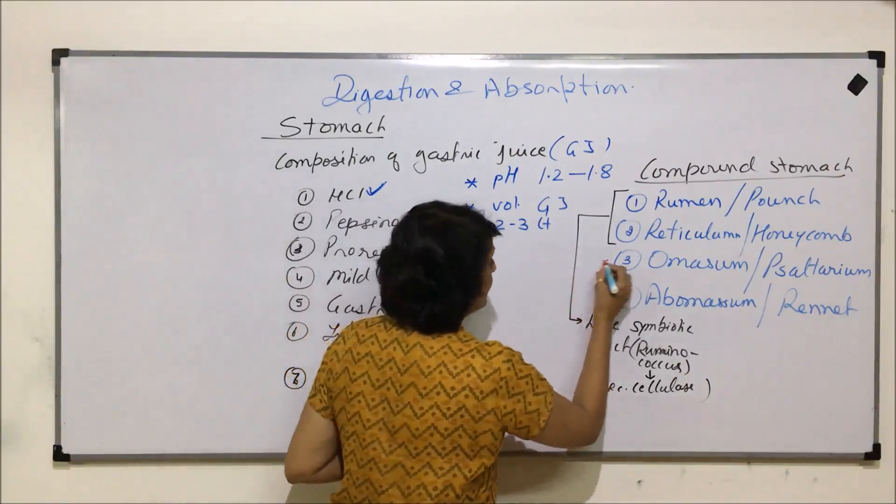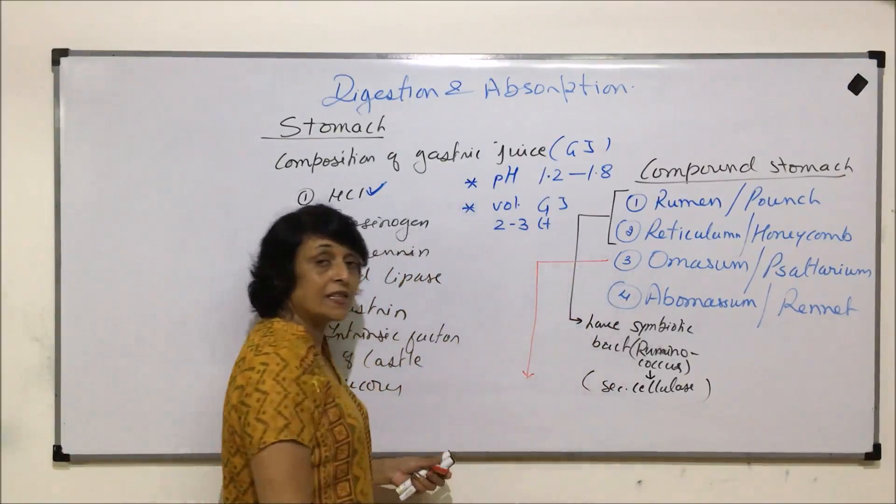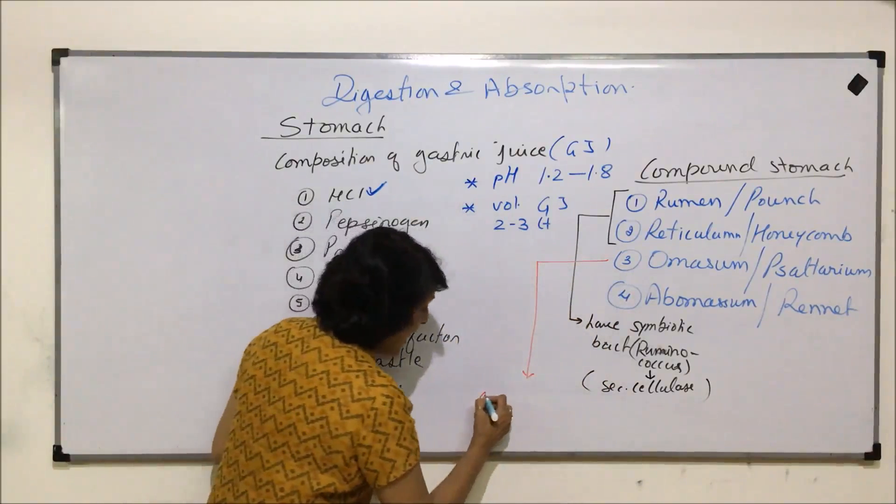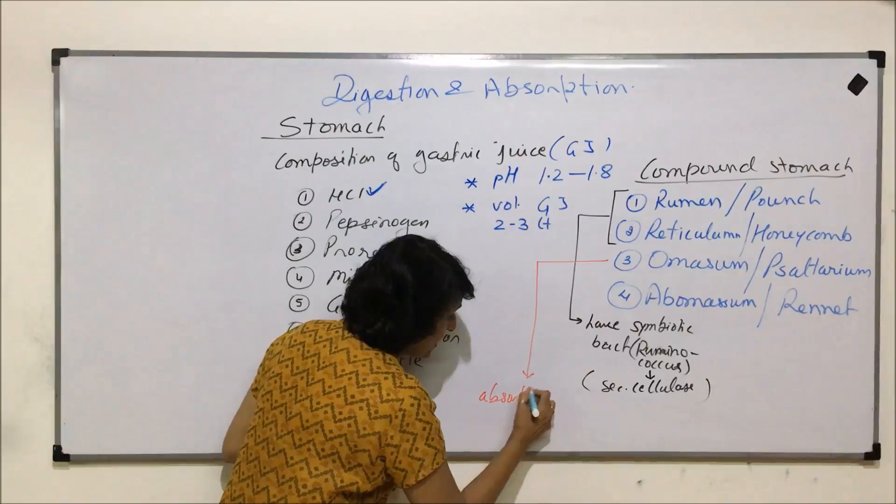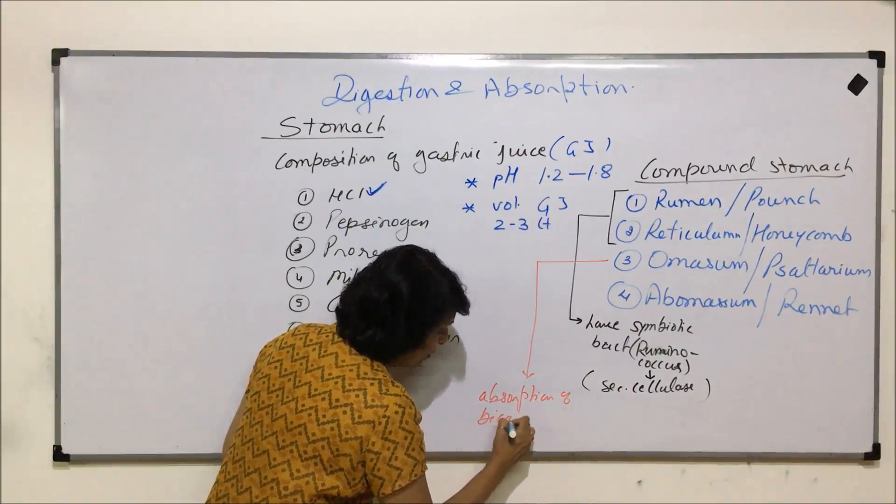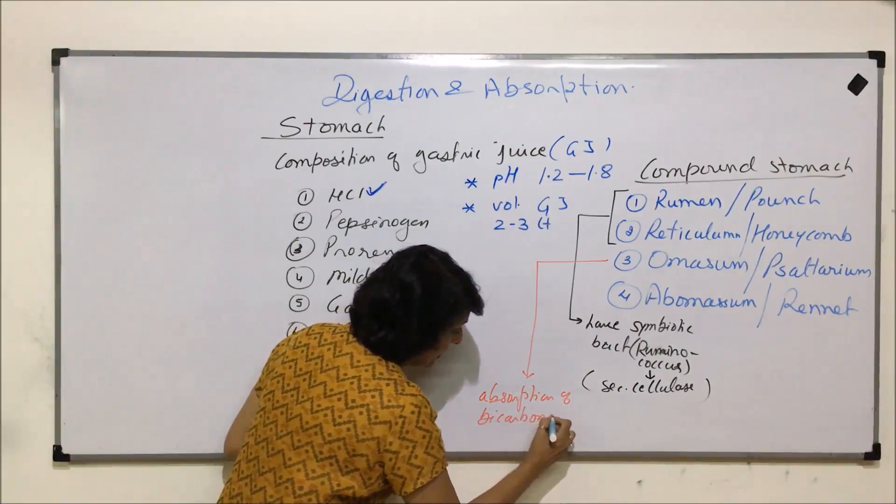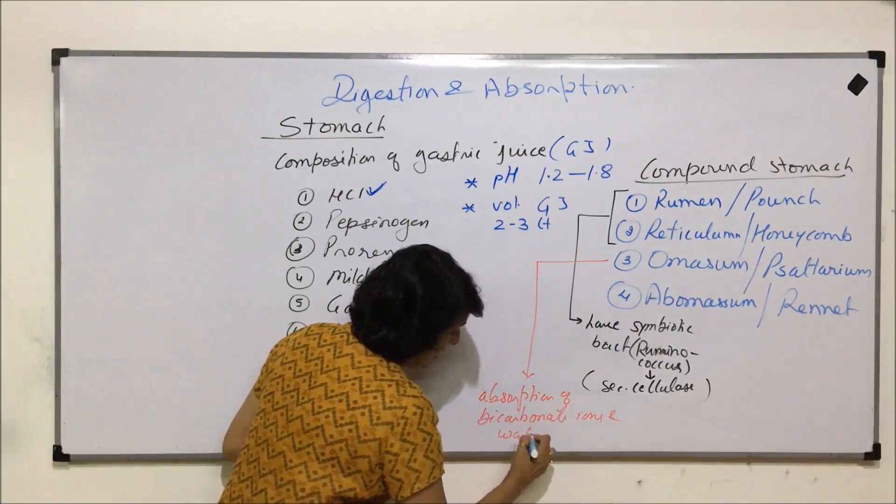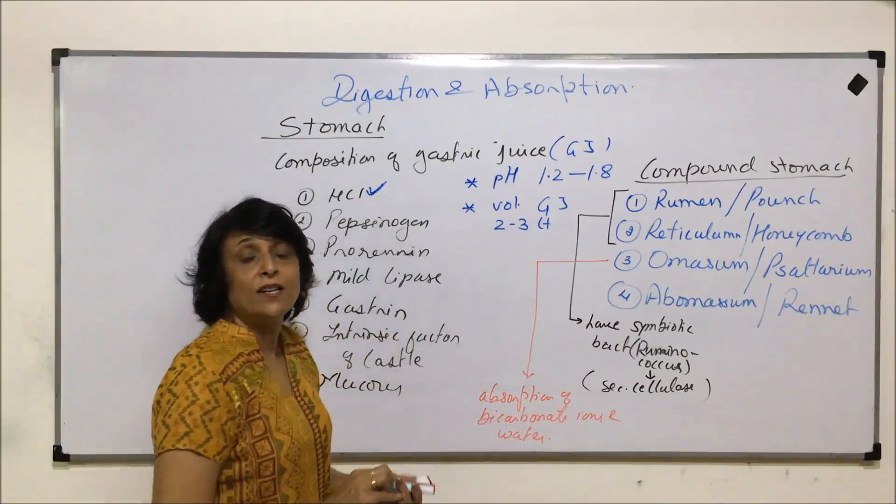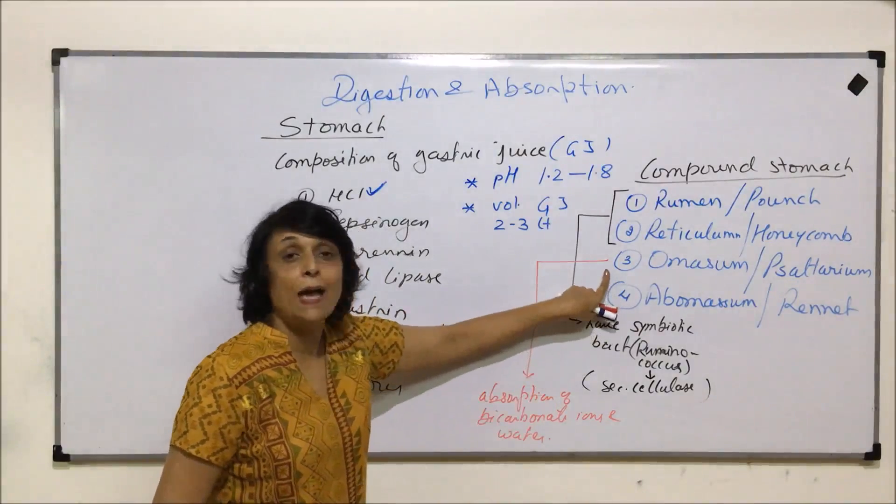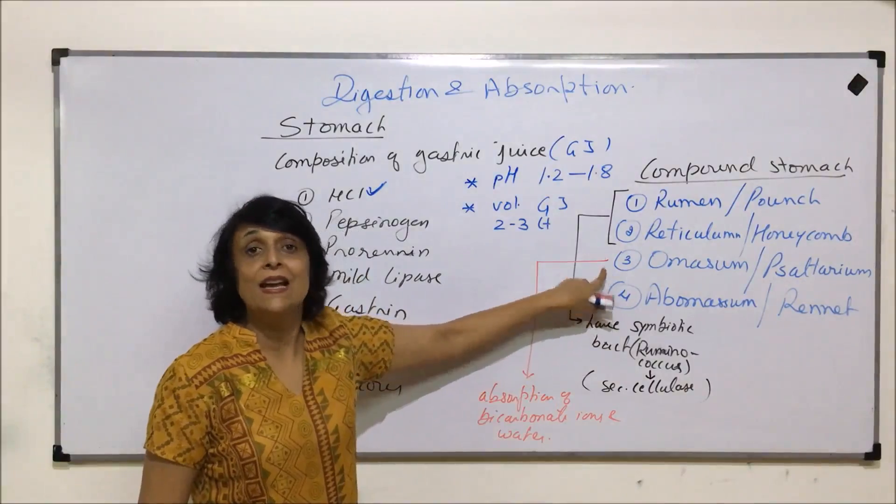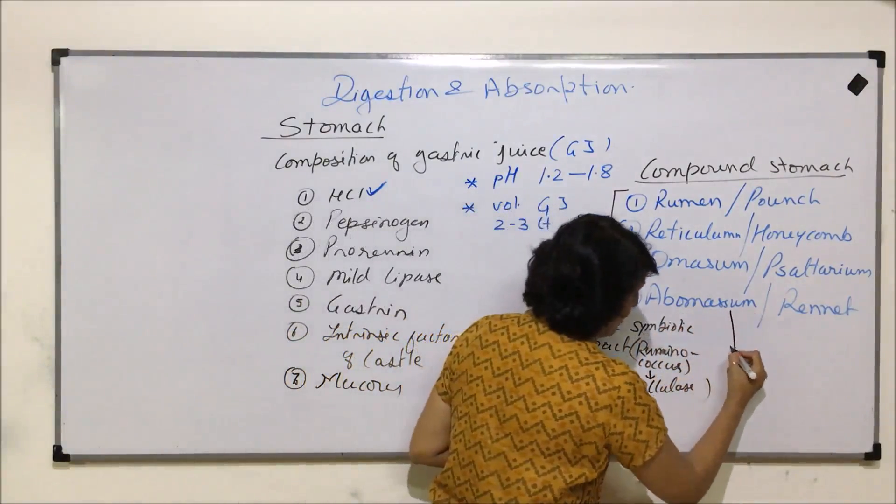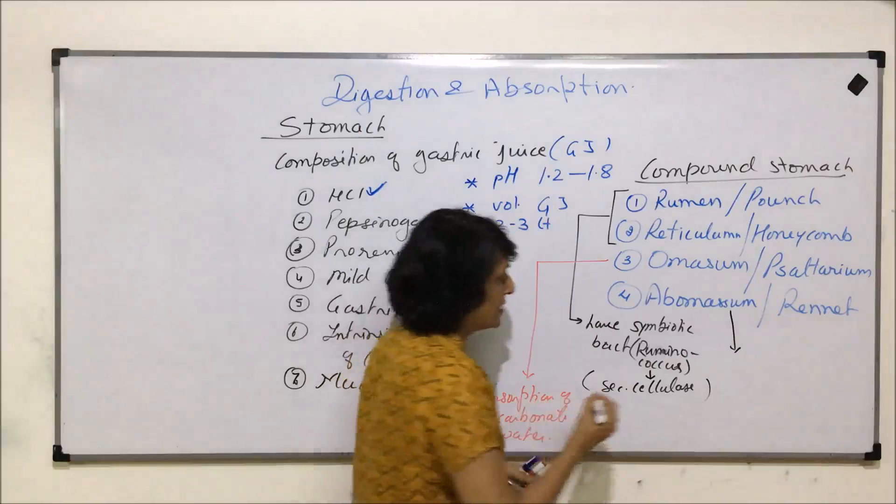Then next is omasum. Omasum helps in absorption of bicarbonate ions and water. This particular compartment is absent in some animals like camels. And the last one, that is abomasum.